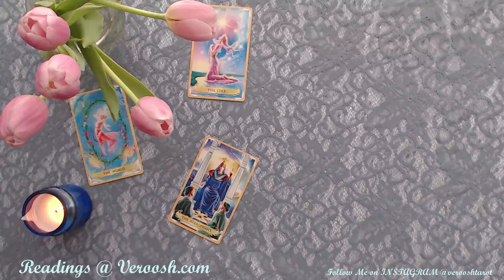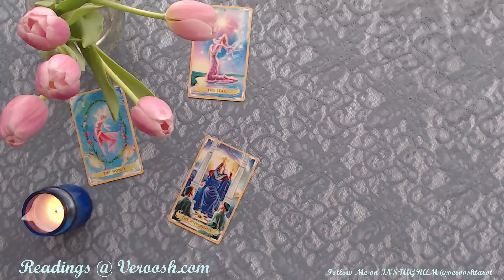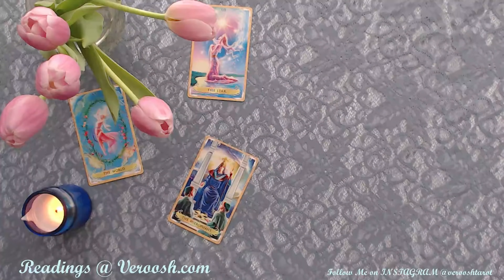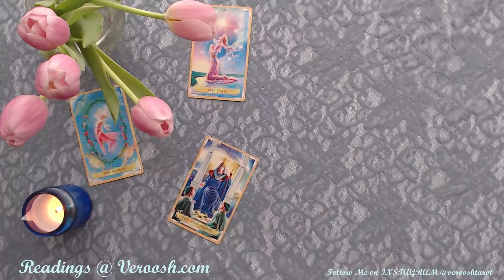A lot of people forget to mention integrating when they're discussing the South Node, and that's a huge part of it. So a lot of people don't know what the South Node and North Node are, so I thought I could explain it. Basically they are two theoretical points, and to understand them you need to understand what the ecliptic is.